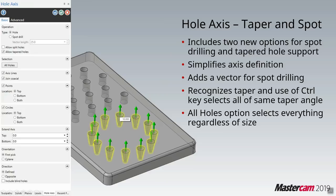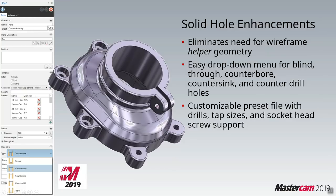We now have the ability to use hole access on holes that are tapered — not just straight holes, but holes that have any kind of taper, all the way down to a spot. And you can now put holes with intelligence into your solids. In the past you'd create an arc and extrude cut through; for a counterbore you'd create another arc and extrude cut to a distance. Starting with 2019 you can select counterbores, simple holes, countersinks, and tapered holes, and put those in as features into your solid models.